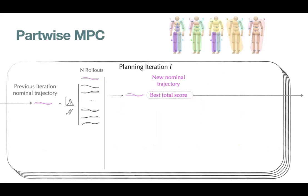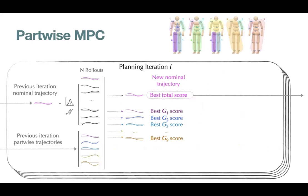Our partwise planner builds on baseline MPC. At each planning iteration, in addition to the N rollouts sampled around the nominal trajectory, we have 5 dedicated partwise rollouts representing the best action recompositions per partition. These rollouts get evaluated along with the rest, and in addition to the nominal trajectory, we also select the rollouts that result in best scores per group.